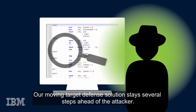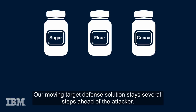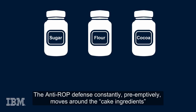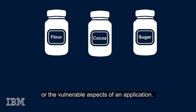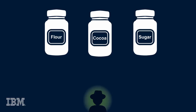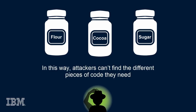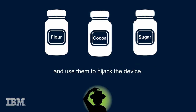Our moving target defense solution stays several steps ahead of the attacker. The anti-ROP defense constantly, preemptively moves around the cake ingredients — the vulnerable aspects of an application — so attackers can't find the different pieces of code they need and use them to hijack the device.